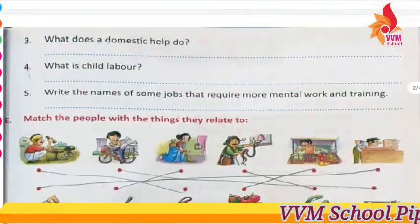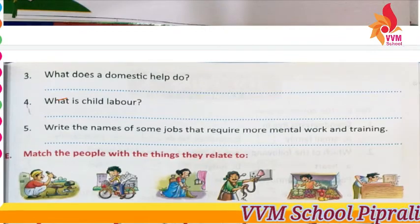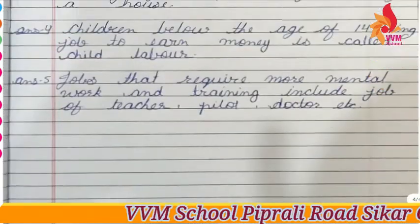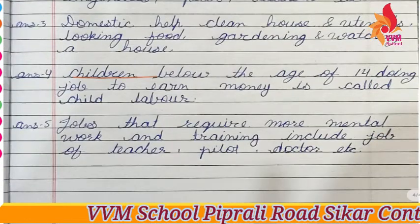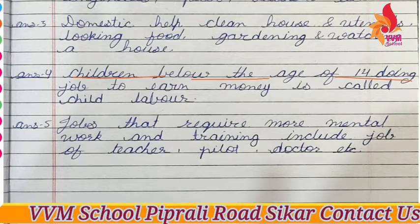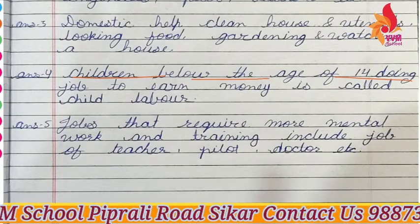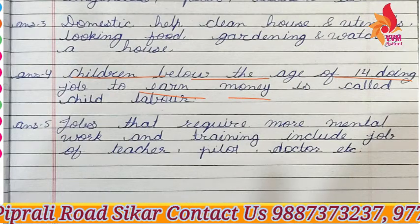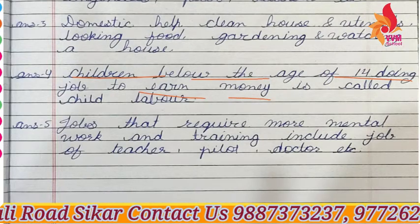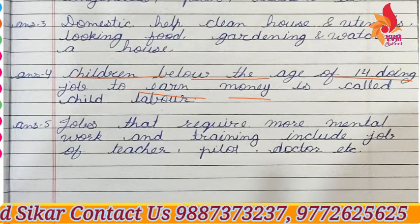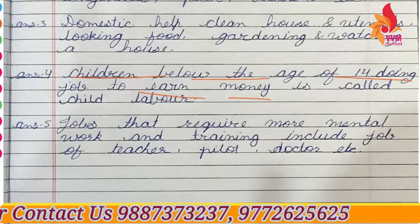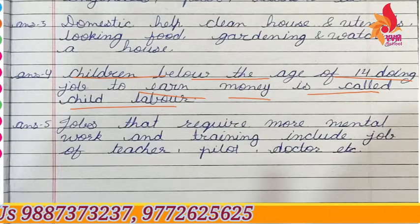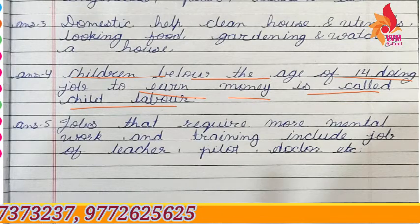Next: what is child labor? Child labor kya hota hai? Children below the age of fourteen — jinki age fourteen se kam hai — who work to earn money, is called child labor. Fourteen se kam age mein jo money earn karne ke liye work karte hain, is called child labor.